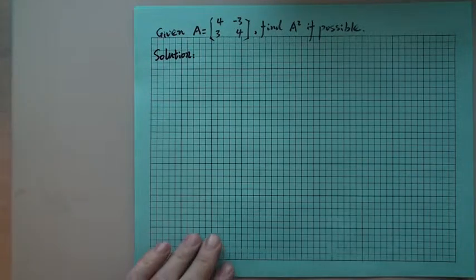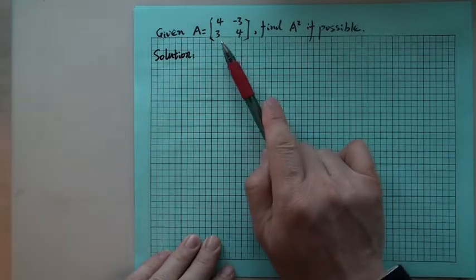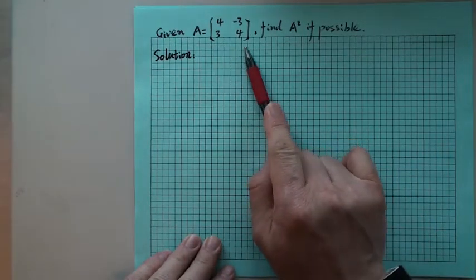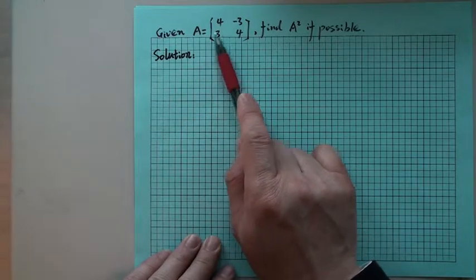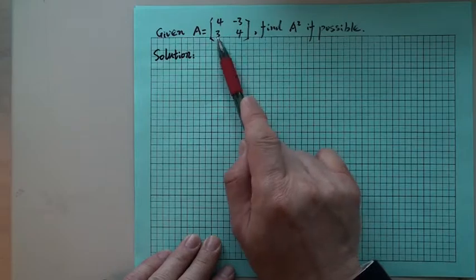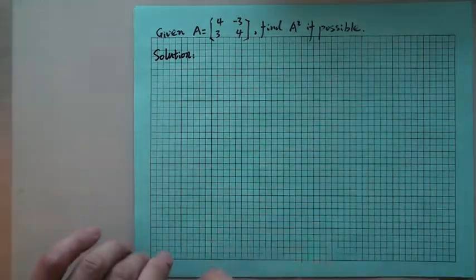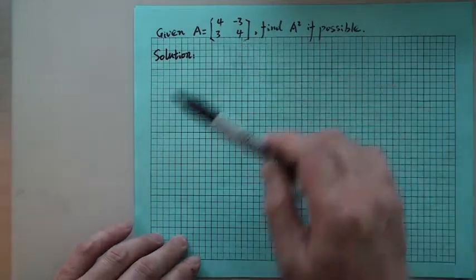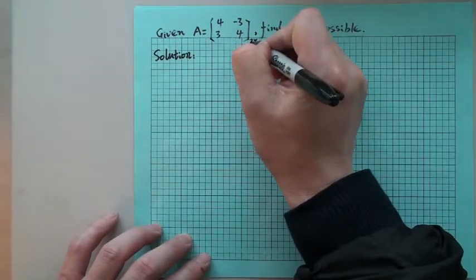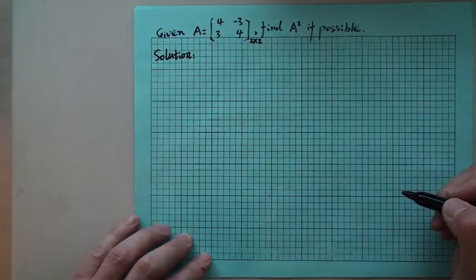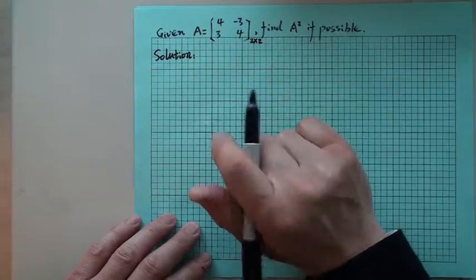In this lecture we will see how we are going to find out the solution for this one. Given a matrix A equals 4, negative 3, 3, 4 — we know there are two rows and two columns, so this is a 2 by 2 matrix. And here we are to find A squared, if possible.